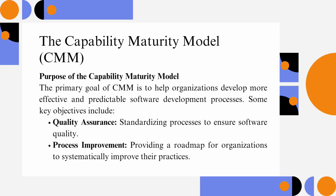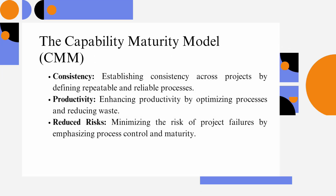The primary goal of CMM is to help organizations develop more effective and predictable software development processes. Key objectives include: Quality Assurance – standardizing processes to ensure software quality; Process Improvement – providing a roadmap for organizations to systematically improve their practices; Consistency – establishing consistency across projects by defining repeatable and reliable processes; Productivity – enhancing productivity by optimizing processes and reducing waste; and Reduced Risks – minimizing the risk of project failures by emphasizing process control and maturity.